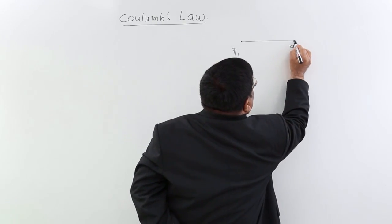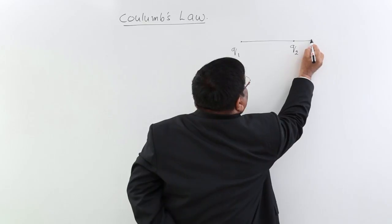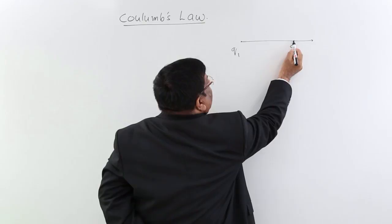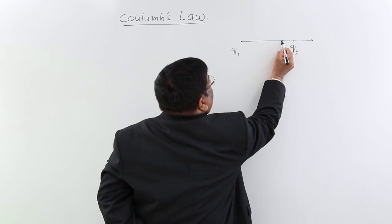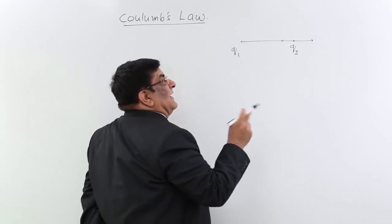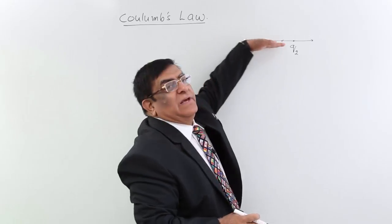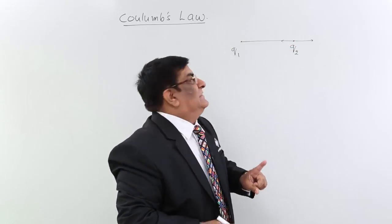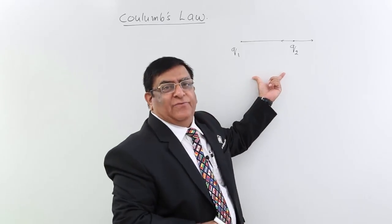So if it is repulsion we will show it this way, if it is attraction then we will show it this way but in any case the direction will be along the line, please remember. The second thing he said is what should be the magnitude of force?